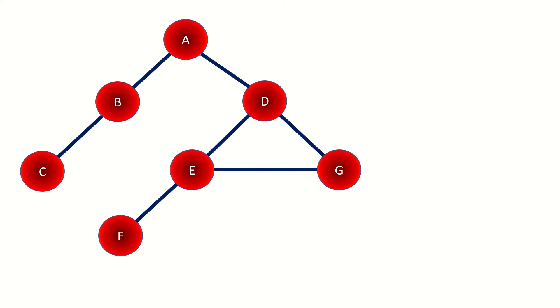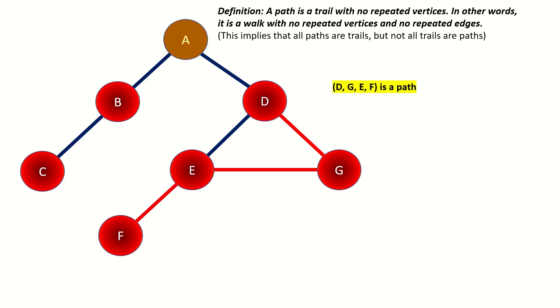Let's impose even more restrictions on trails. What if we do not allow ourselves to repeat vertices or repeat edges? Then we have a path. Here's another example of a path in this graph. Note that there is an exception to the no repeated vertices rule. We are allowed to repeat the first and last vertex in our path.